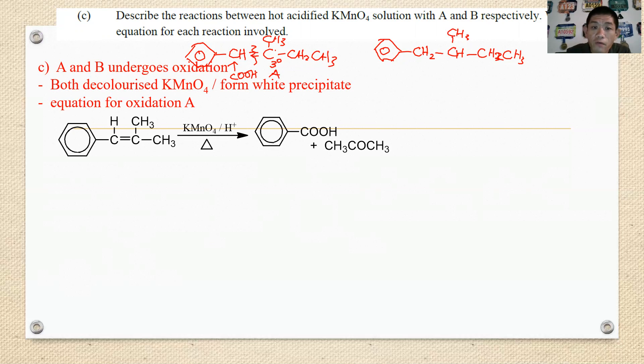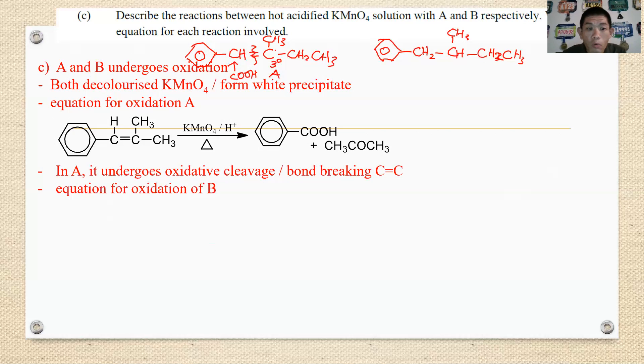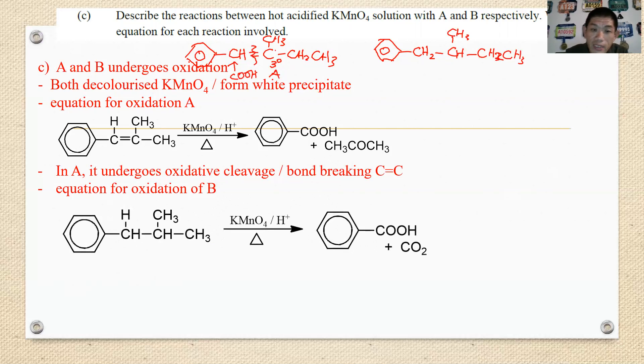You must describe the reactions and write the equation. A and B will undergo oxidation. Since the question does not mention that it will undergo what process, you have to mention that this process is an oxidation process. Both decolorize KMnO4 to form a white precipitate. Then you have to explain the equation of A, so this is the expected product for A where you have A react with KMnO4 under reflux to form benzoic acid plus ethanone. Then in A it undergoes oxidation oxidative cleavage or bond breaking of C double bond C, while this is the equation of B where this is the oxidation involving the benzylic position.